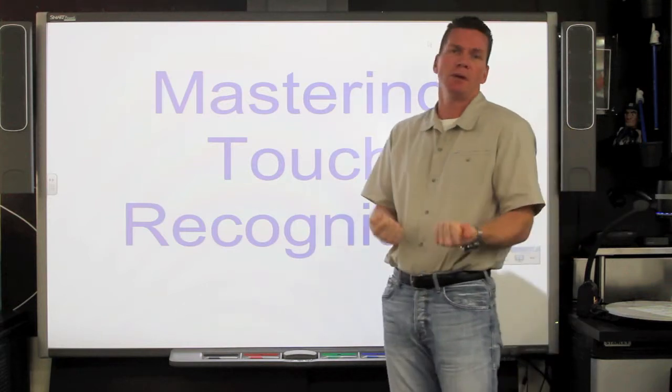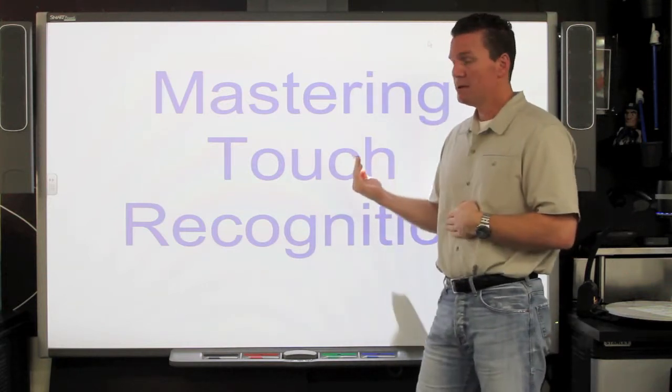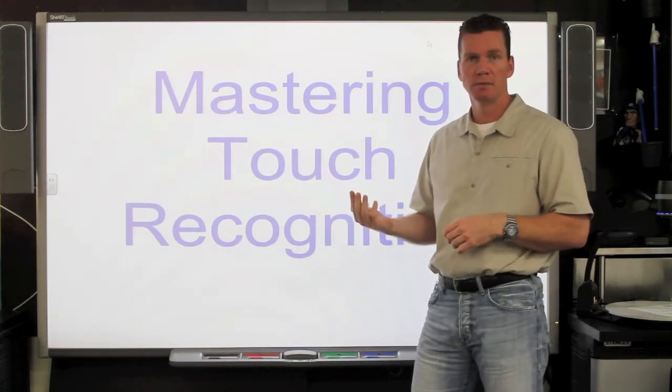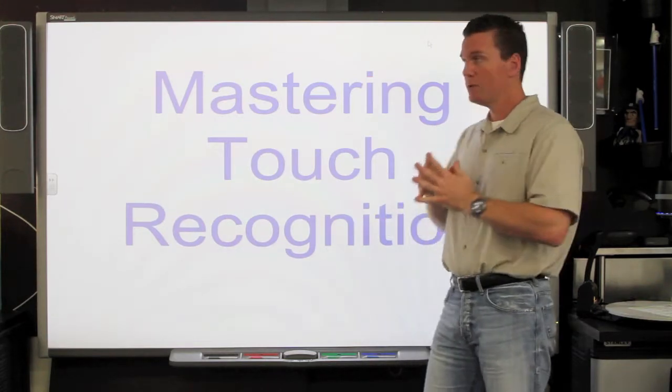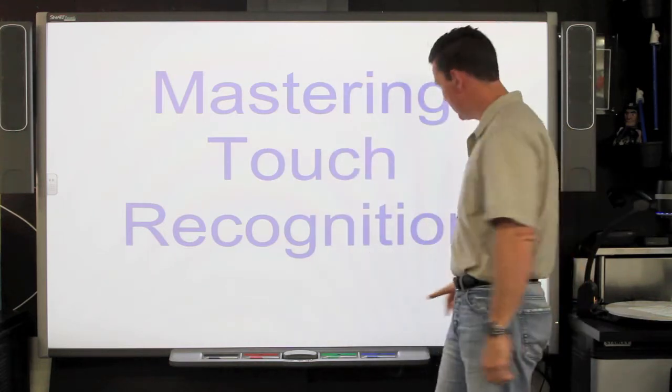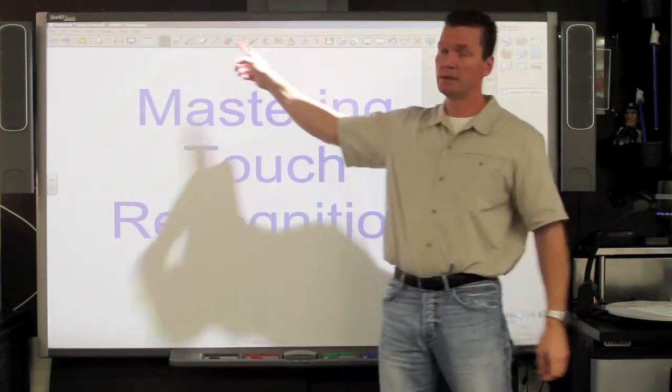In a nutshell, touch recognition is the board's ability to differentiate between the size of the implements touching it, and what that does is it frees you from dependence on the tray and it frees you from dependence on the buttons at the top of the board.